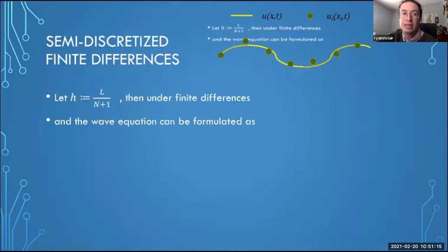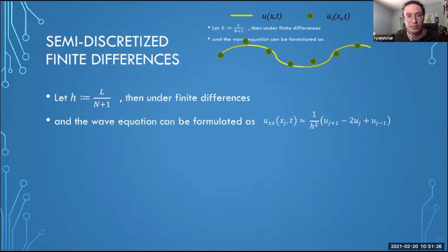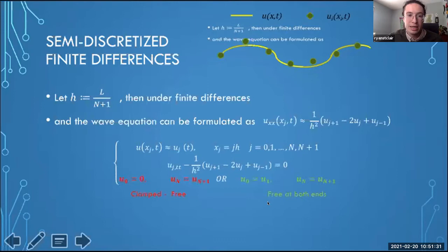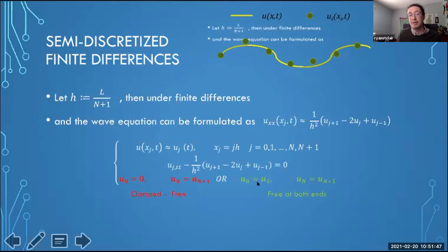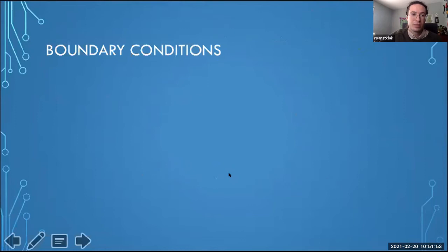Using finite differences, we get a semi-discretized wave equation — we only discretize the spatial component. We can formulate the wave equation with the boundary conditions written out here: this represents our mixed Dirichlet-Neumann boundary conditions, and this represents pure Neumann at both ends. I'll show how we approximated the boundary conditions discretely.